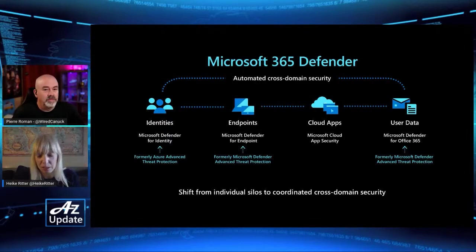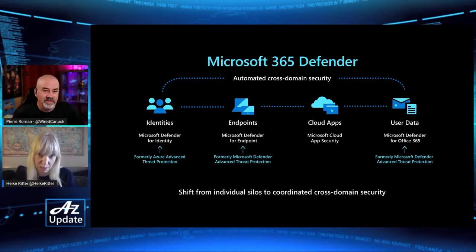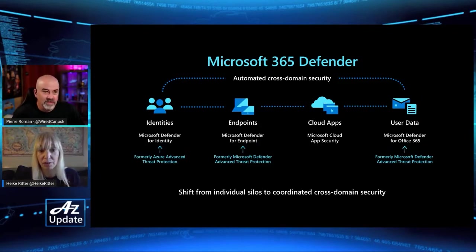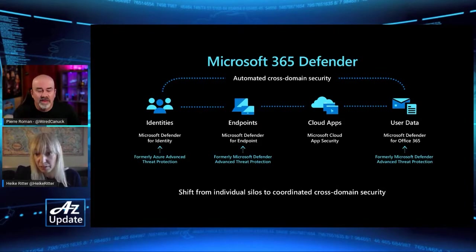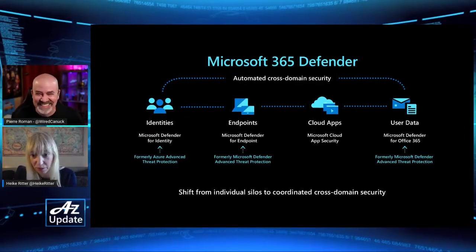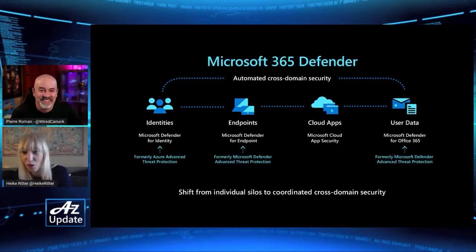We announced new names for all the individual pieces that are part of Microsoft 365 Defender. Azure Advanced Threat Protection is now Microsoft Defender for Identity. Microsoft Defender ATP is now Microsoft Defender for Endpoint. And Office 365 ATP — there's a typo in the slide — is now Microsoft Defender for Office 365.